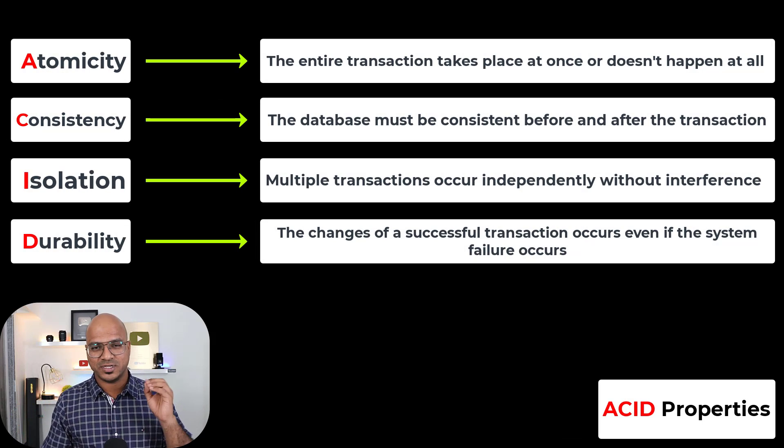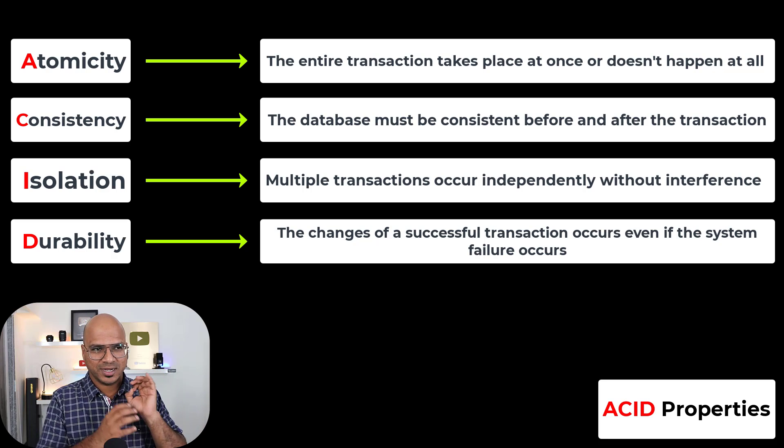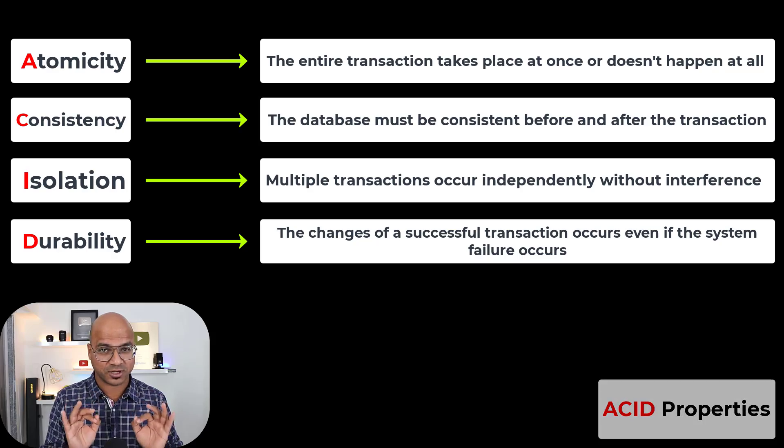The basic idea of relational databases is that they provide something called ACID properties — consistency, durability, and all those important things. For example, if you do a transaction and it fails in between, it will roll back completely. It's not like you store half the data and half is undone. So it's awesome.